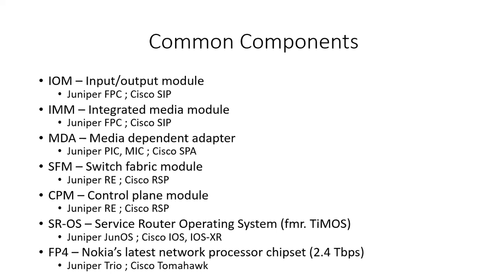Lastly, we have FP4, which is Nokia's latest network processor chipset, capable of 2.4 terabits per second. It's synonymous with Juniper's Trio chipset or Cisco's Tomahawk chipset.